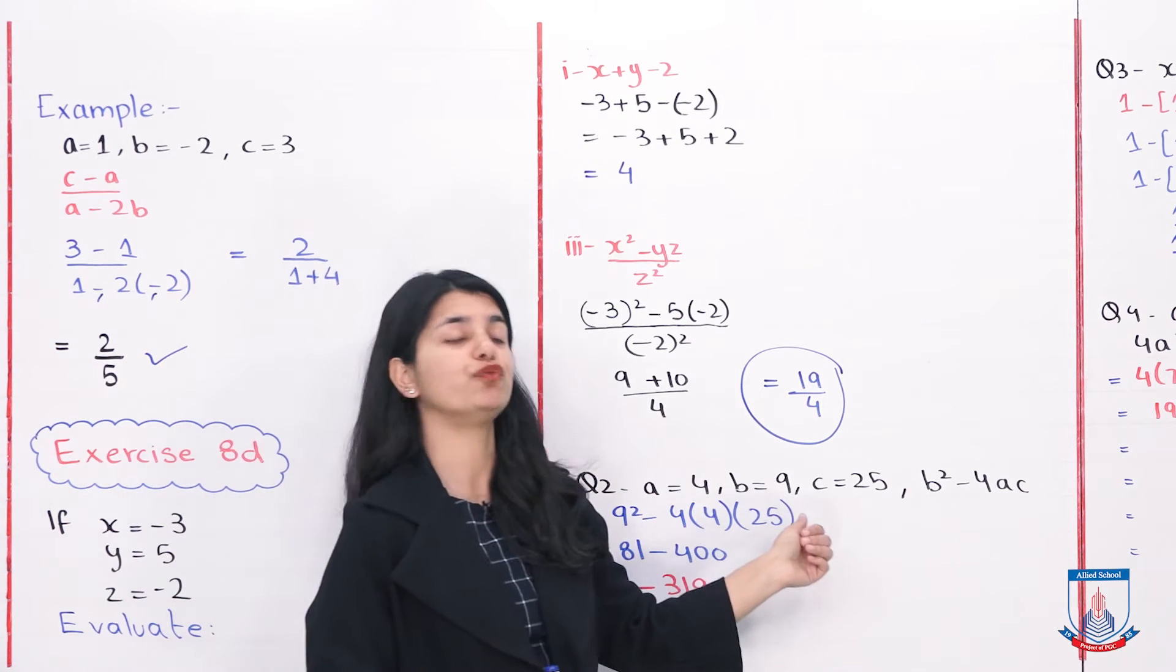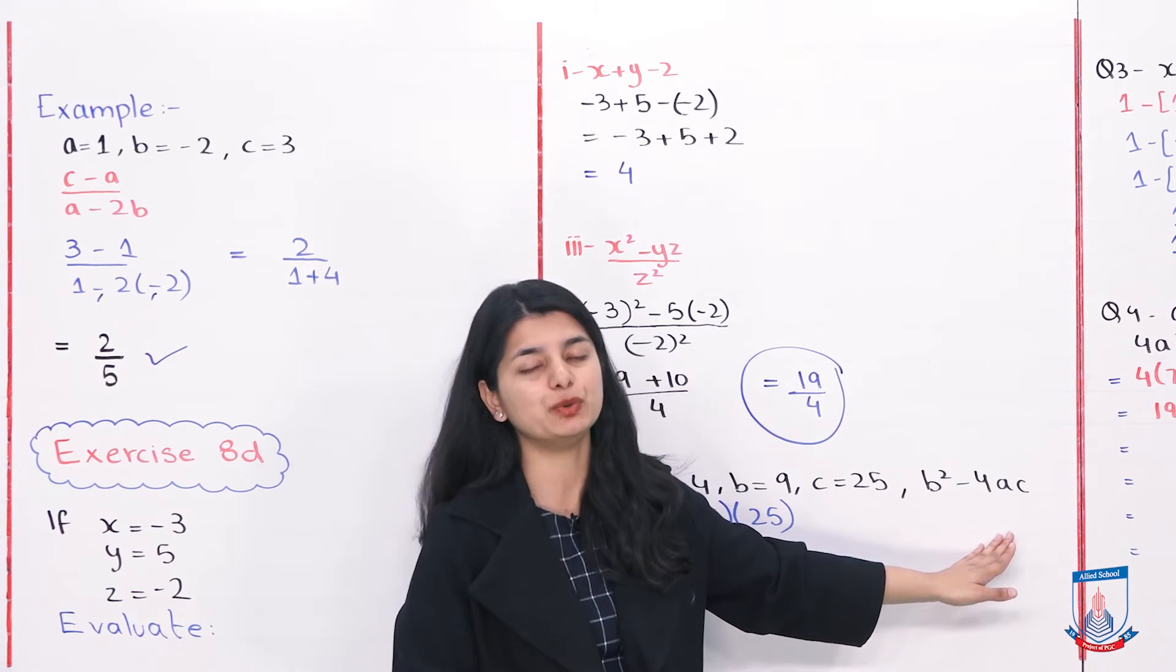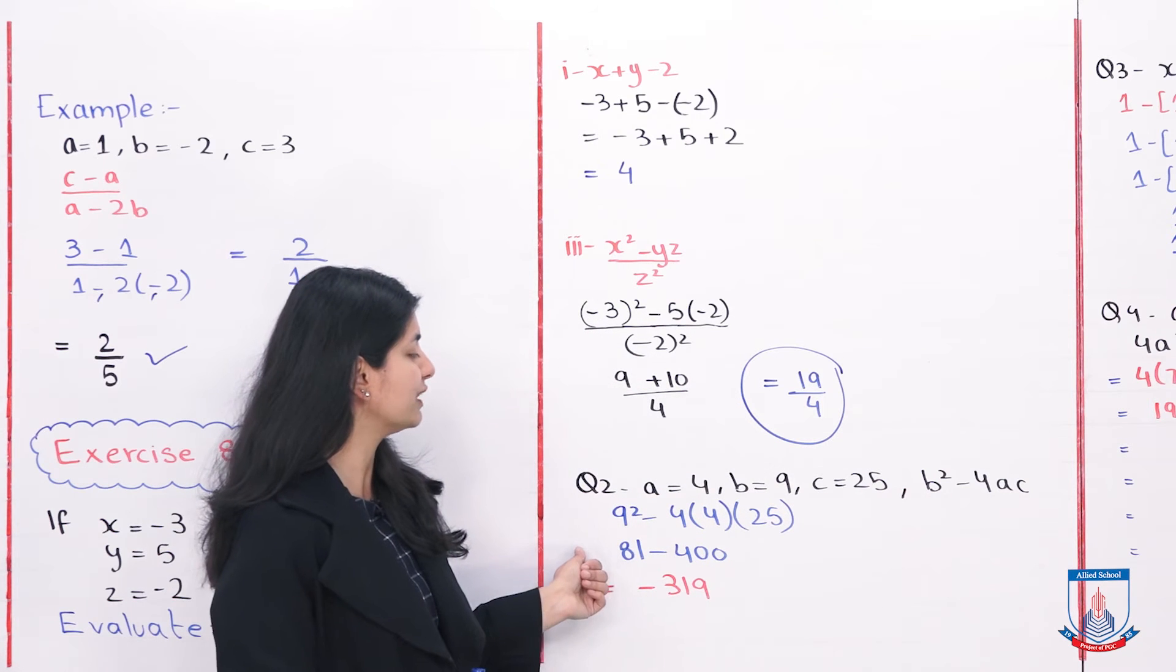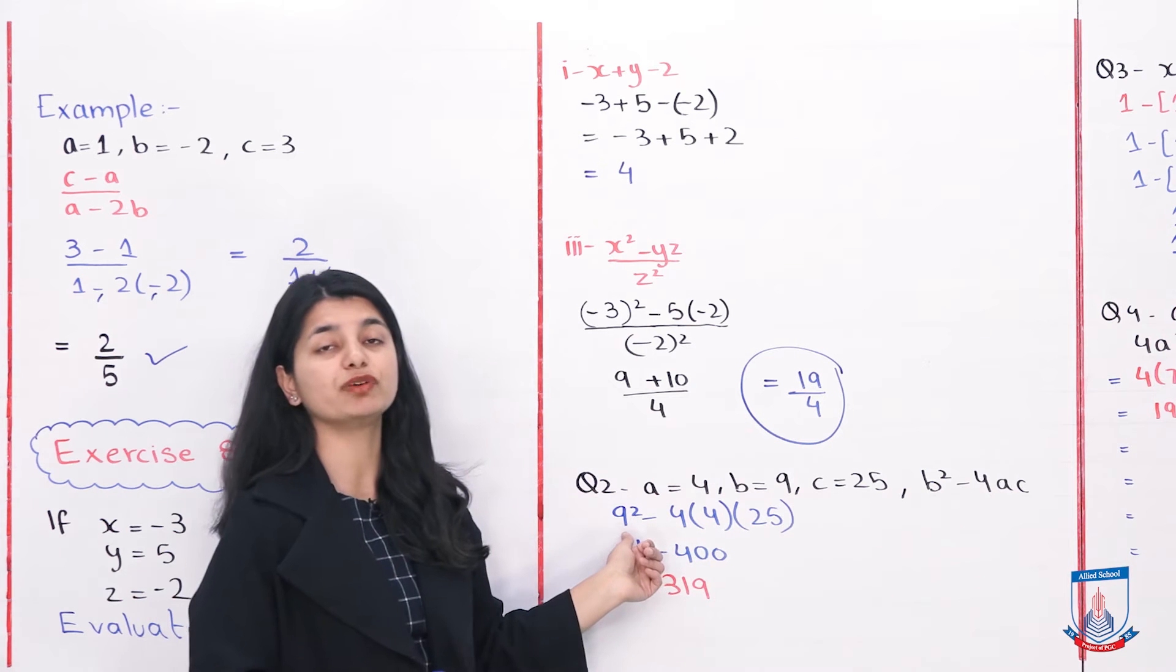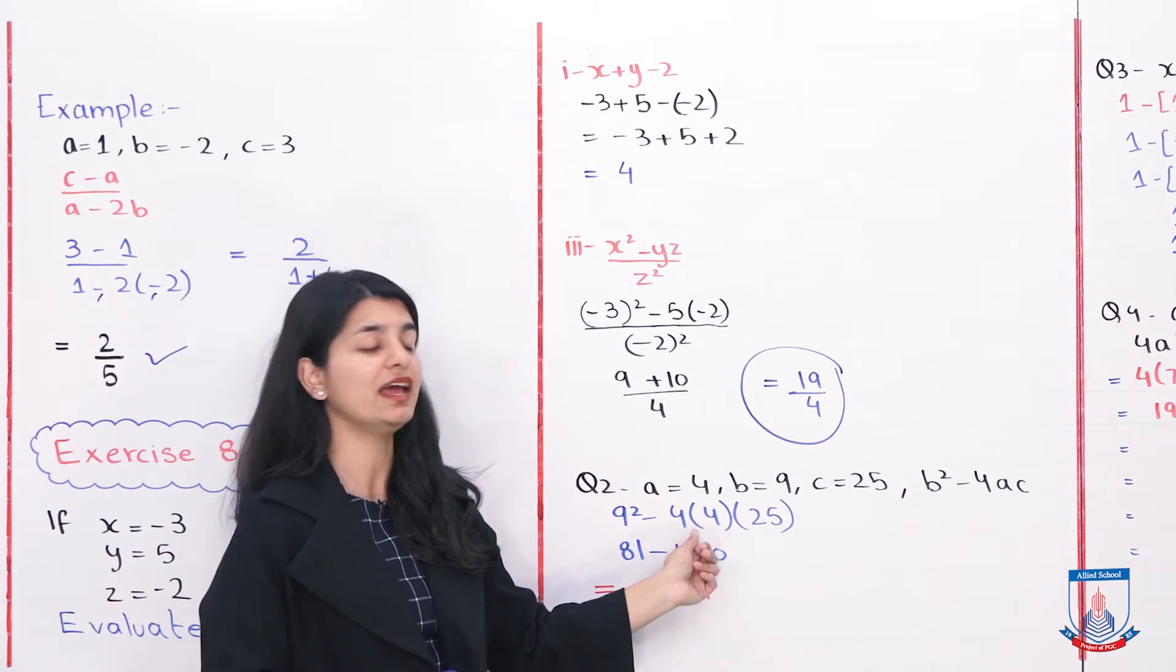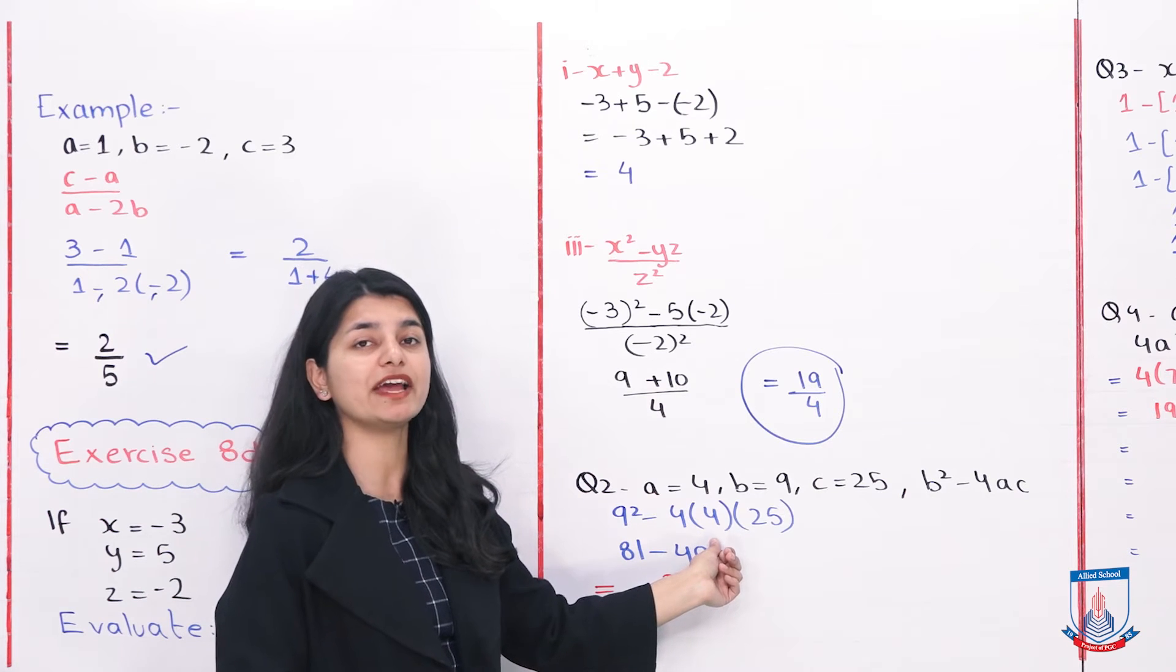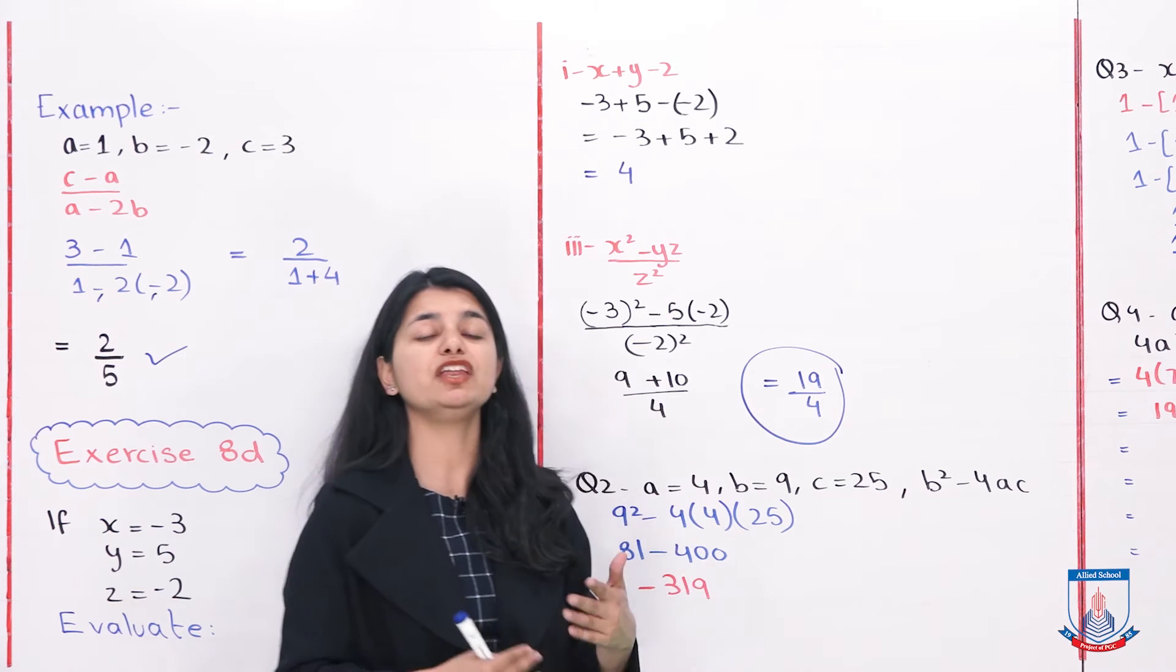Question 2: a equals 4, b is 9, and c is 25. Calculate the value of b squared minus 4ac. The method is very easy. In place of b squared, we write 9 squared because b value is 9. Then minus 4, in place of a we put 4, and into c we put 25.